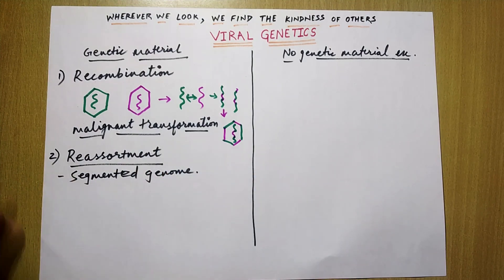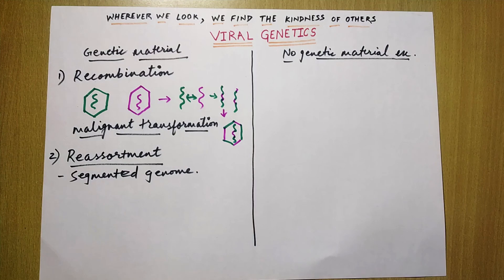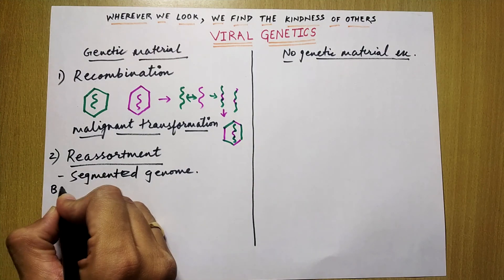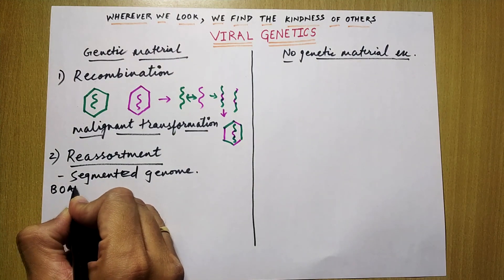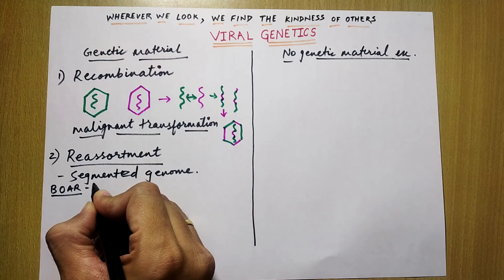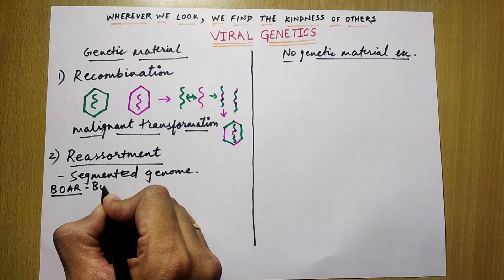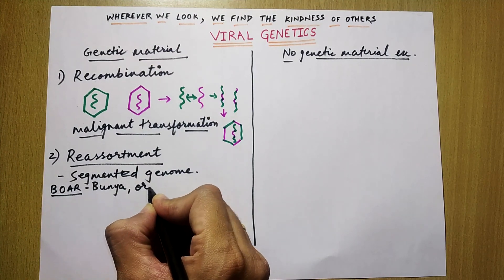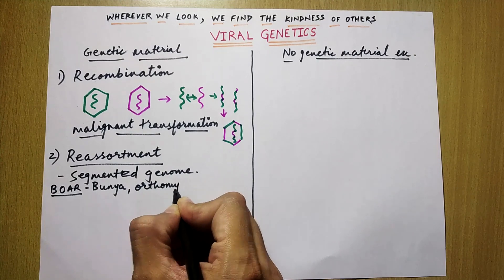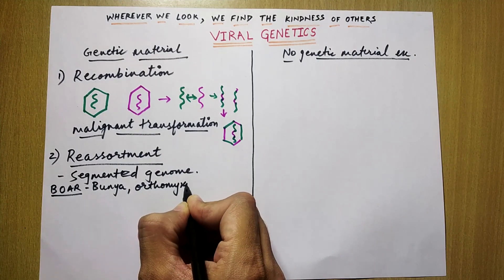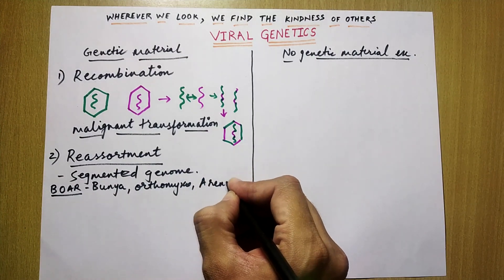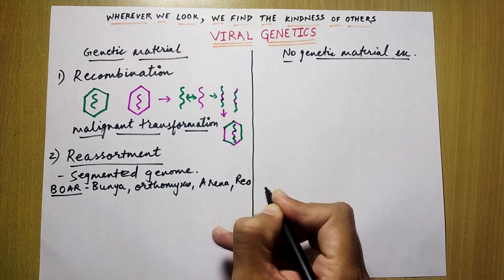Can you name a few viruses that contain a segmented genome? The mnemonic for that is BOAR — B-O-A-R — and the viruses are Bunyavirus, Orthomyxovirus, Arenavirus, and the last one is Reovirus.